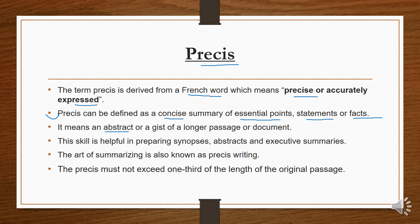A précis means an abstract — a main idea or gist — it means an overview, a theme, a main point of a longer passage. This skill is helpful in preparing a synopsis. Synopsis means a lengthy document in short form. So we can prepare synopses, abstracts, main themes, main ideas, and executive summaries.